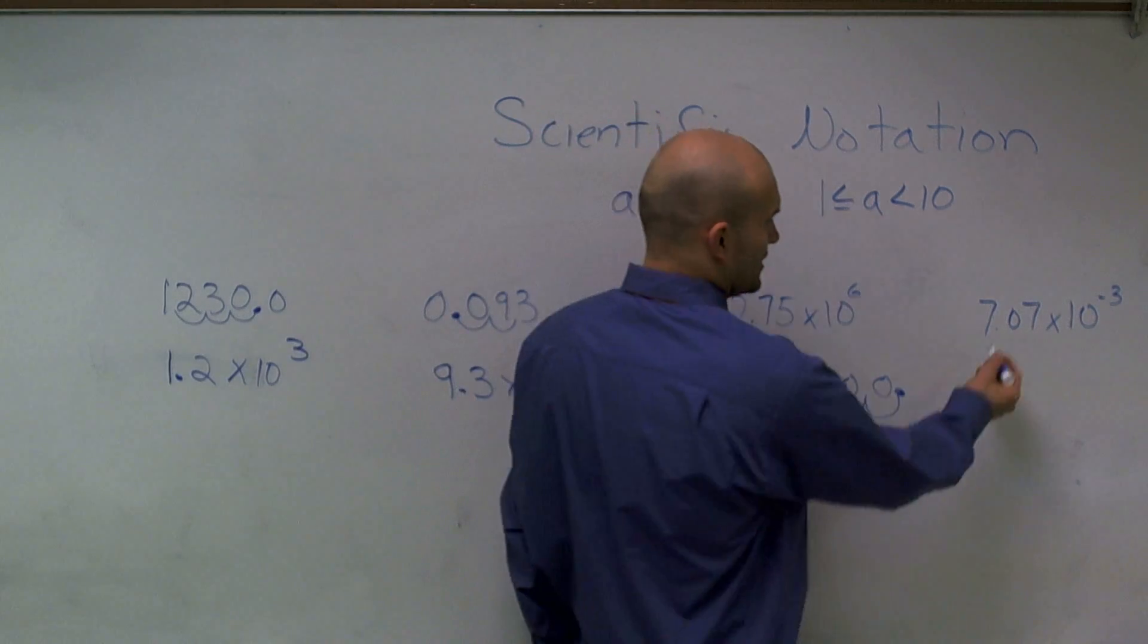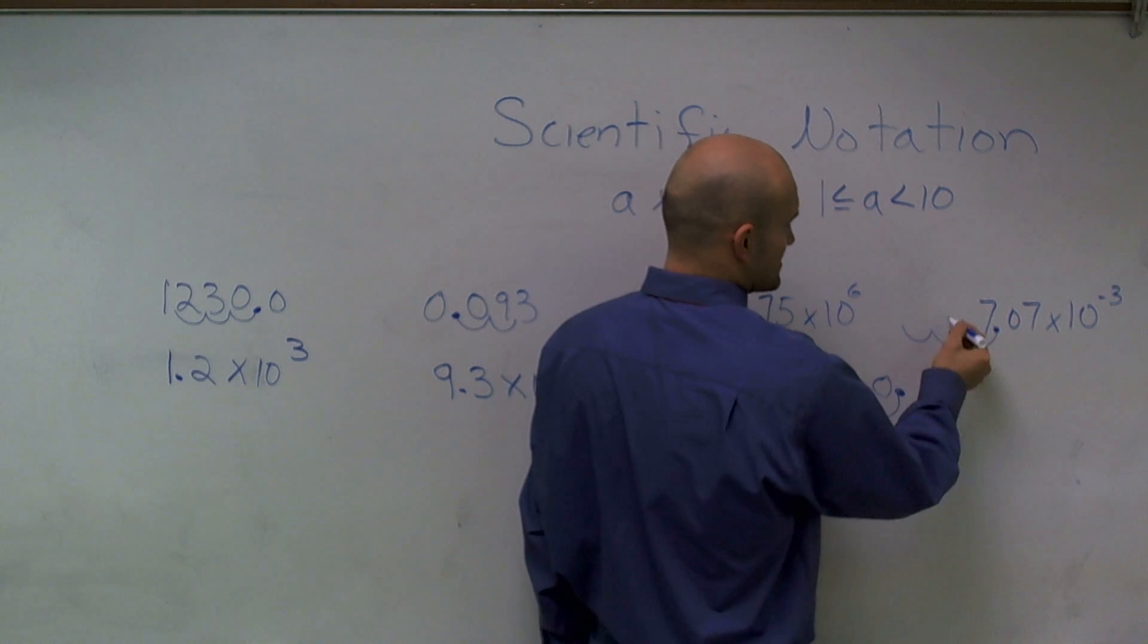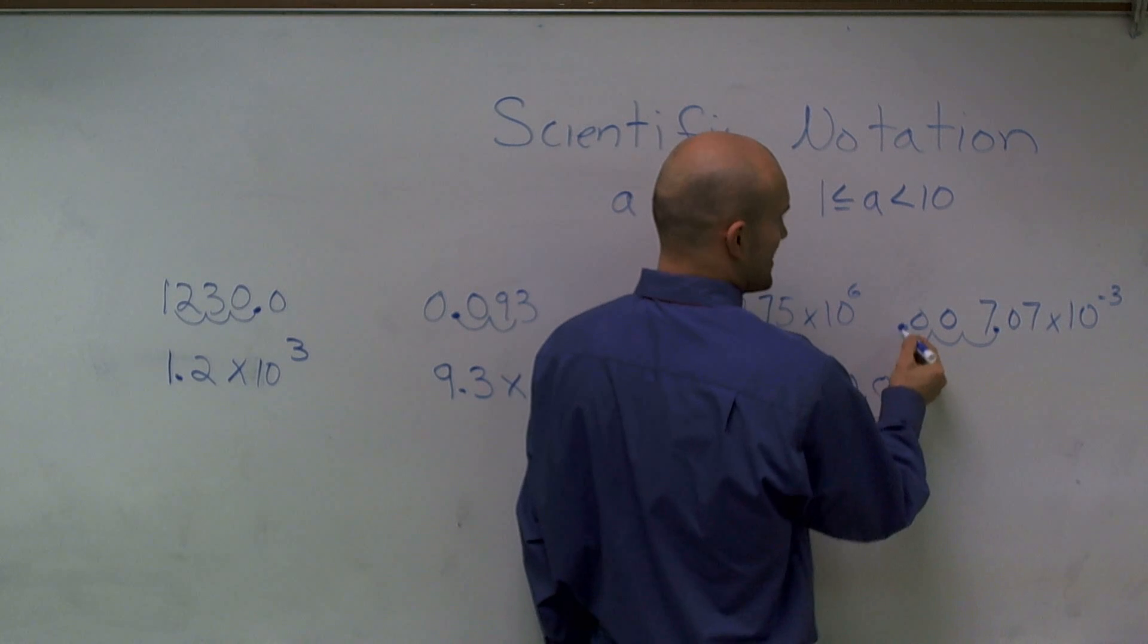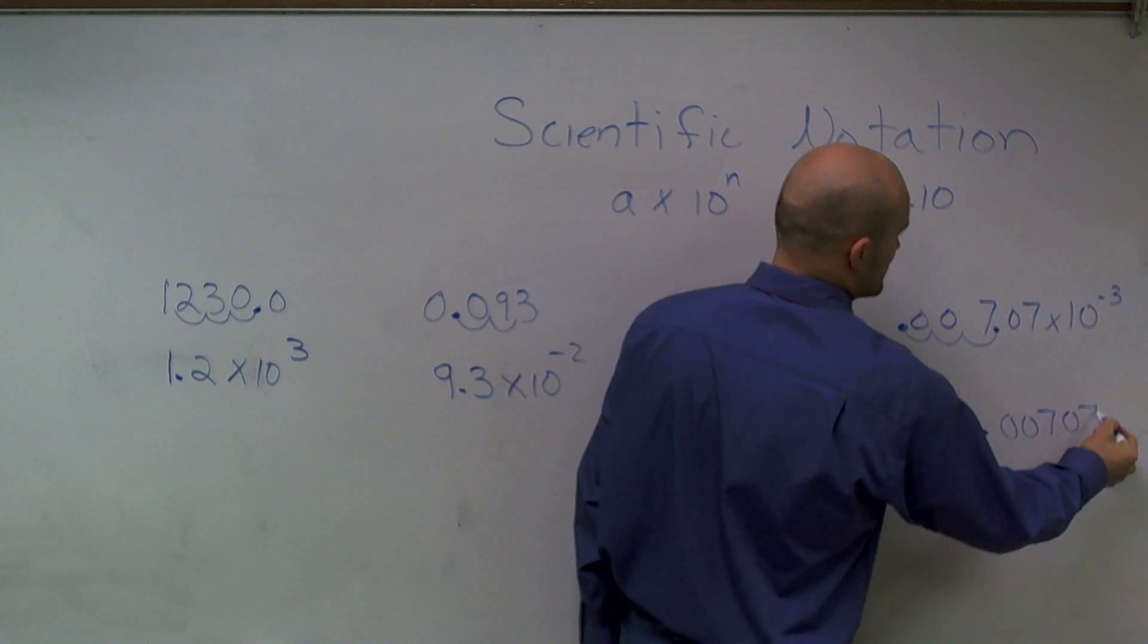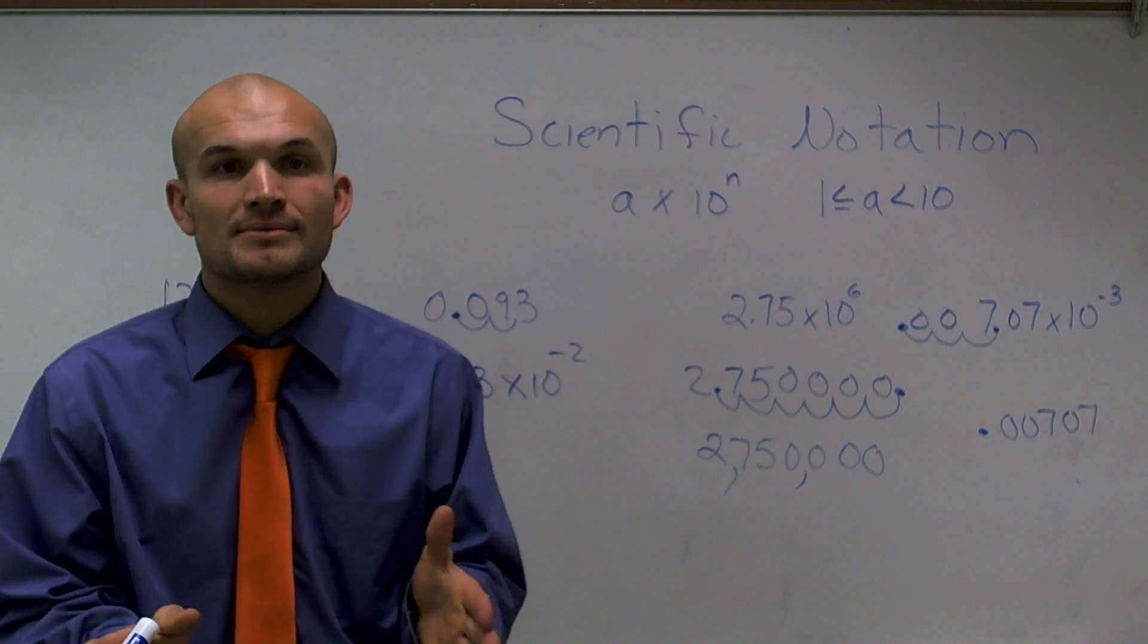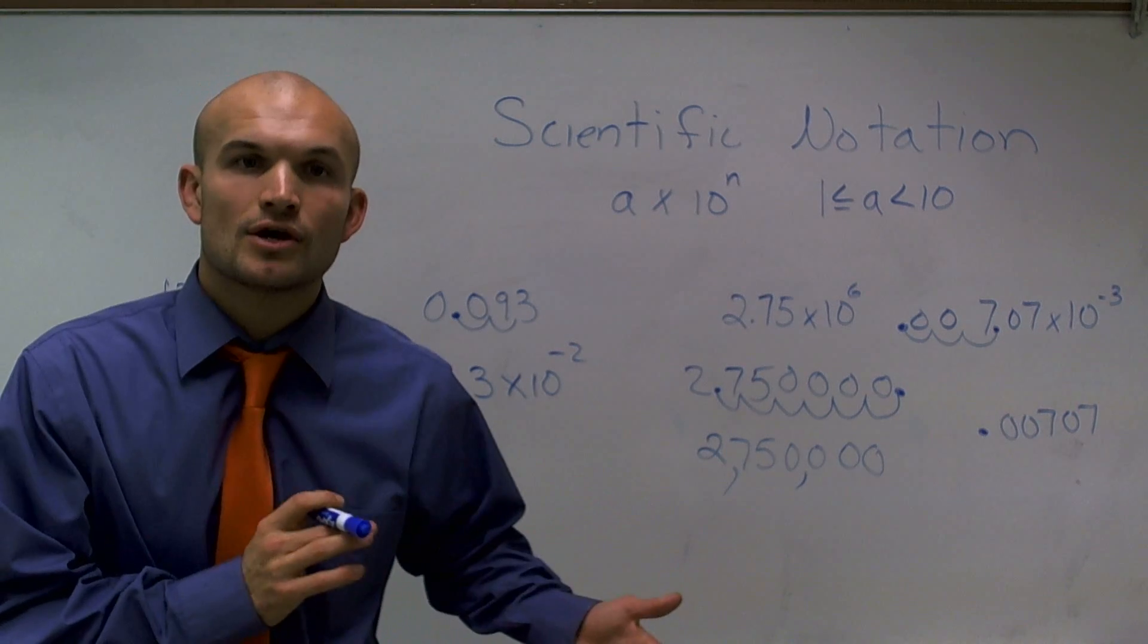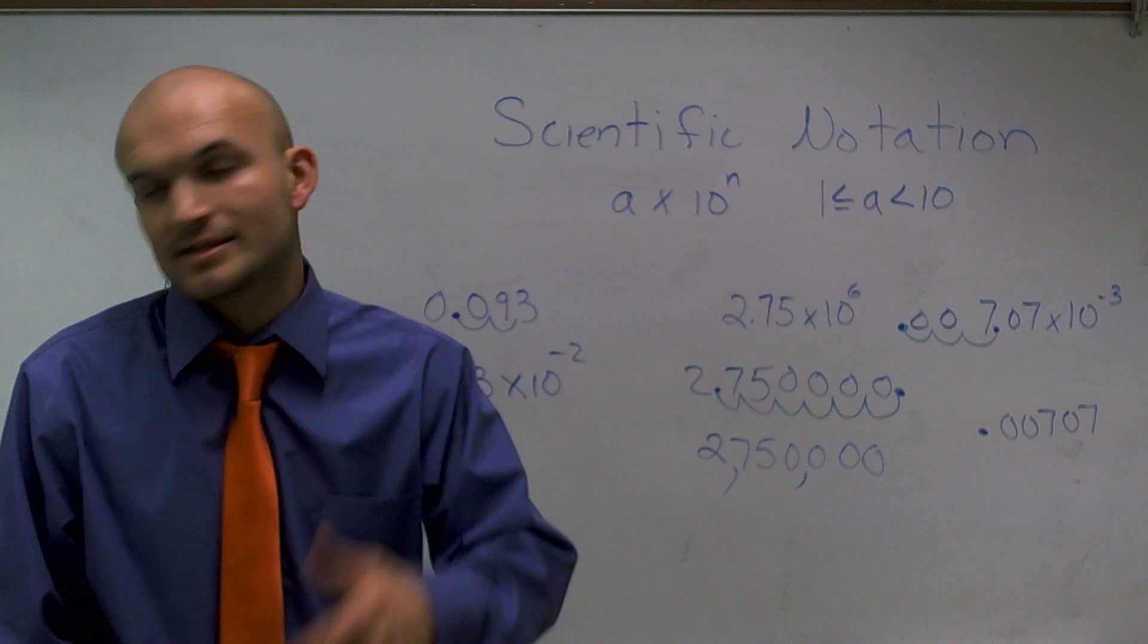Then over here, if I have a negative, that means I need to move my exponent to the negative 3 spots. So I can fill those empty spots with zeros. So I have 0.00707. Now what I'd like to do is give you guys some problems that I want you to solve on your own, and then I'll come back here and show you how to do those answers.